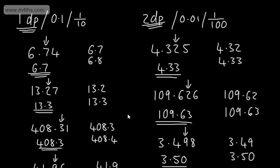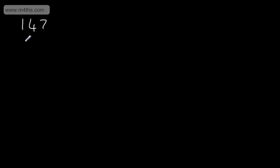So that's rounding a number to two decimal places. We're now going to look at rounding to significant figures. Let's start off by looking at what a significant figure is. I'm going to write out a list of numbers: 147, 3,692.